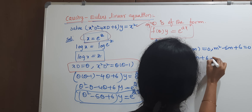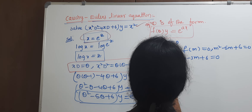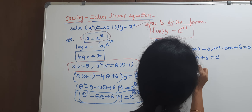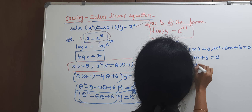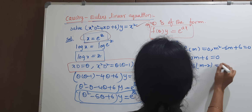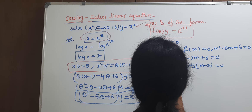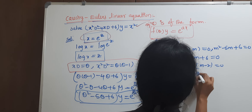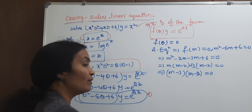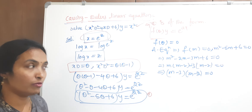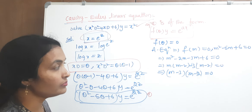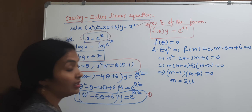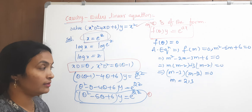Factoring: take m out as (m minus 2) and (m minus 3). The roots are m equals 2 and m equals 3.